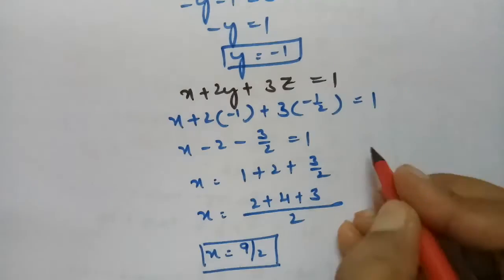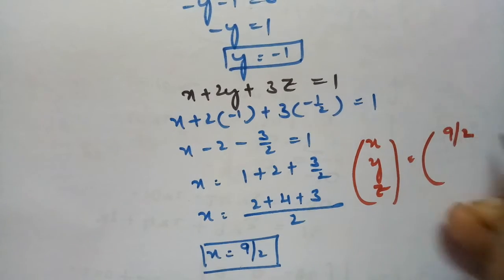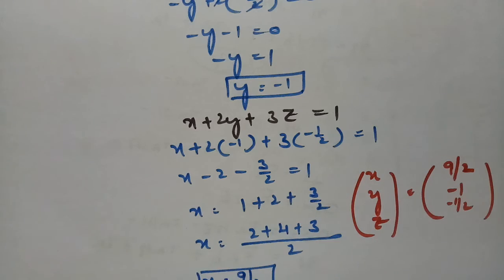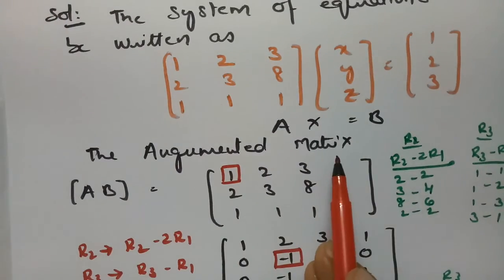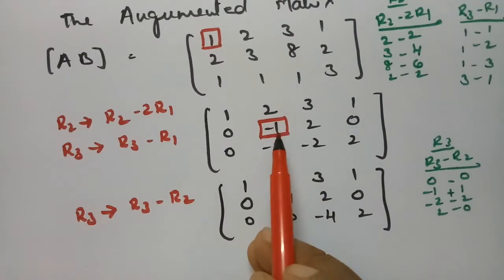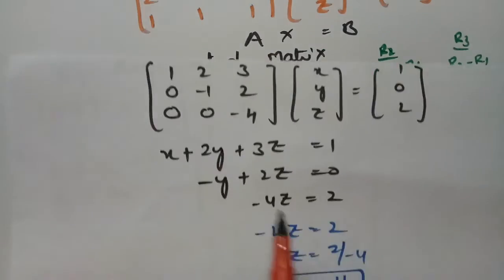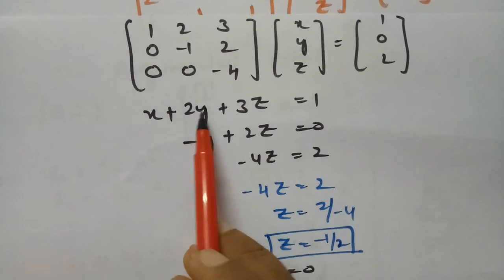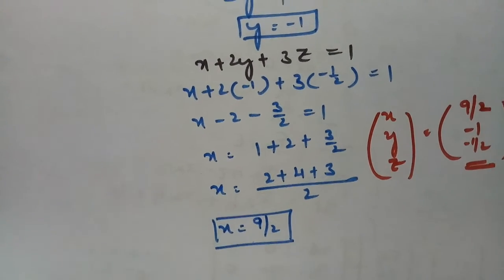So the solution is x = 9/2, y = minus 1, and z = minus half. To summarize: write the system as Ax = b, form the augmented matrix, use diagonal elements to create zeros below them via row operations, then back-substitute to find z, then y, then x. This is how we solve using Gauss elimination.